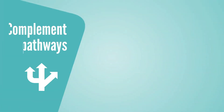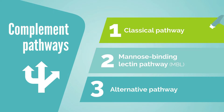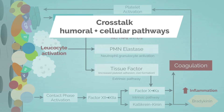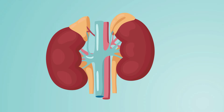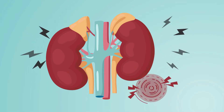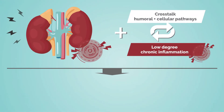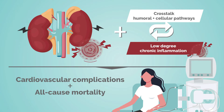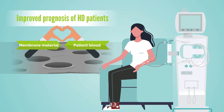In the previous video, we looked at the main pathways of activation resulting from blood-material interactions during hemodialysis. The crosstalk between different humoral and cellular pathways leads to a low degree of chronic inflammation. As the pathogenesis of chronic kidney disease itself involves inflammatory processes, additional dialysis-induced inflammation aggravates the risk of cardiovascular complications and all-cause mortality. Having more hemocompatible membranes to minimize side effects therefore contributes to improved prognosis of hemodialysis patients.